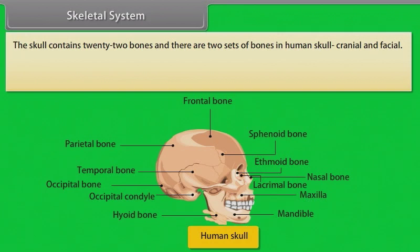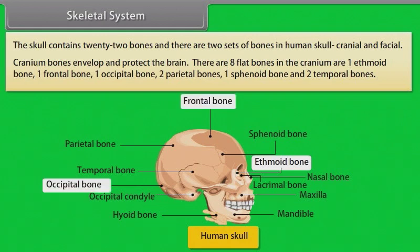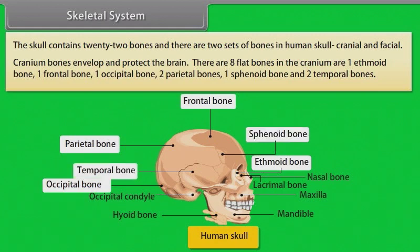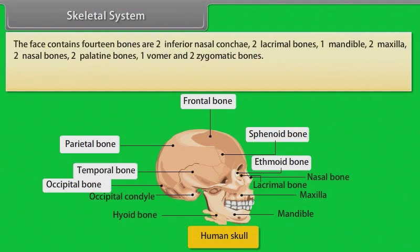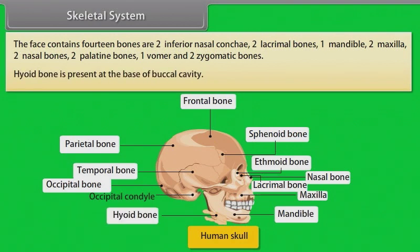The skull contains 22 bones, and there are two sets of bones in the human skull: cranial and facial. Cranium bones envelop and protect the brain. There are eight flat bones in the cranium: one ethmoid bone, one frontal bone, one occipital bone, two parietal bones, one sphenoid bone, and two temporal bones. The face contains 14 bones: two inferior nasal conchae, two lacrimal bones, one mandible, two maxilla, two nasal bones, two palatine bones, one vomer, and two zygomatic bones.